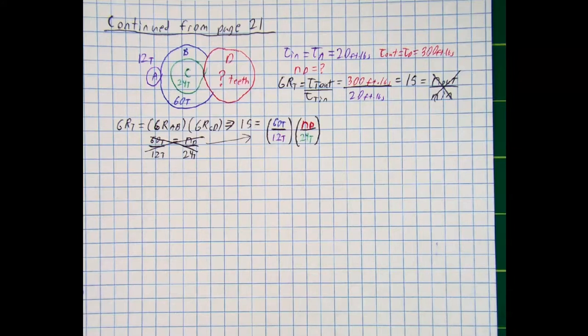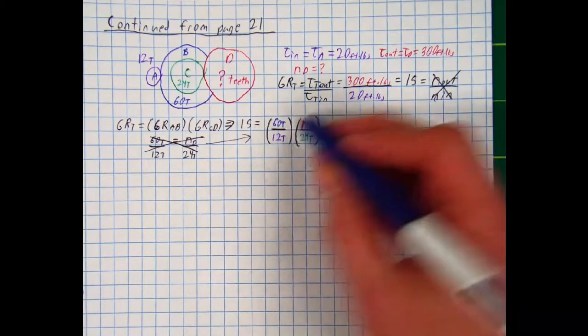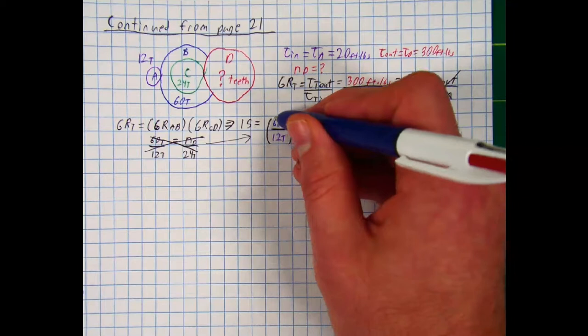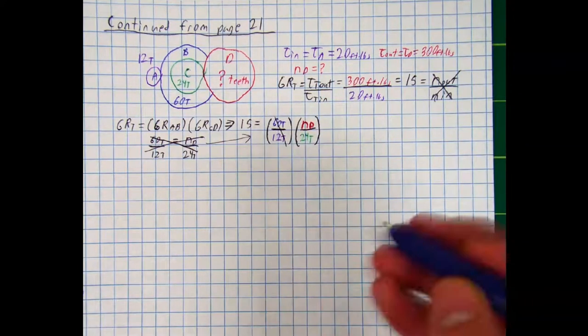But from here, let's go ahead and solve for the number of teeth at D. And to do that, the first thing I'm going to do is I'm going to simplify the 60 teeth divided by 12 teeth. That's going to end up, the teeth are going to cancel out, and we're going to end up with 5.